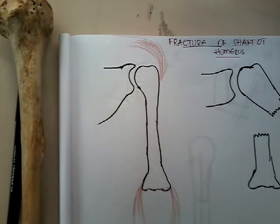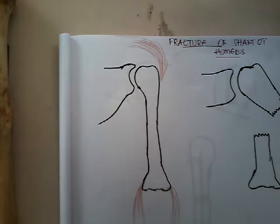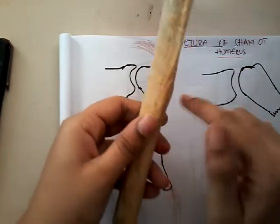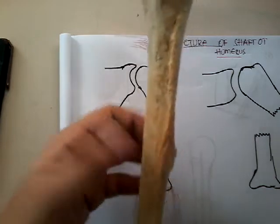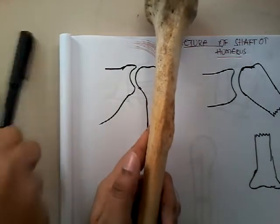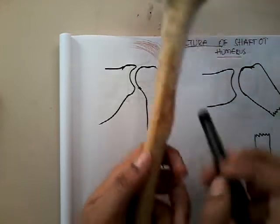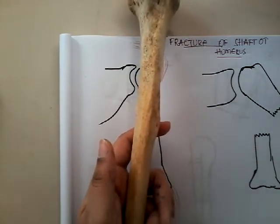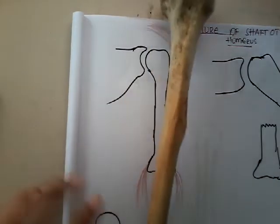Welcome to a new lecture on fracture of shaft of humerus. This is the humerus, this is the scapula. Whenever there is an indirect twisting or bending force on the humerus shaft, there can be injury to the shaft of humerus at any level. The fracture can be transverse, oblique, spiral, comminuted, or segmental. These are the different types of fracture patterns seen in fracture shaft of humerus.